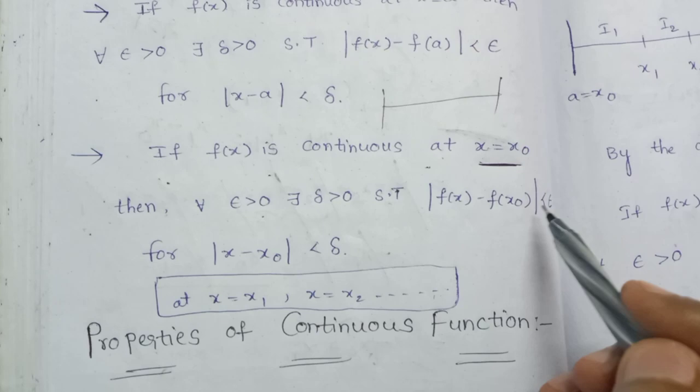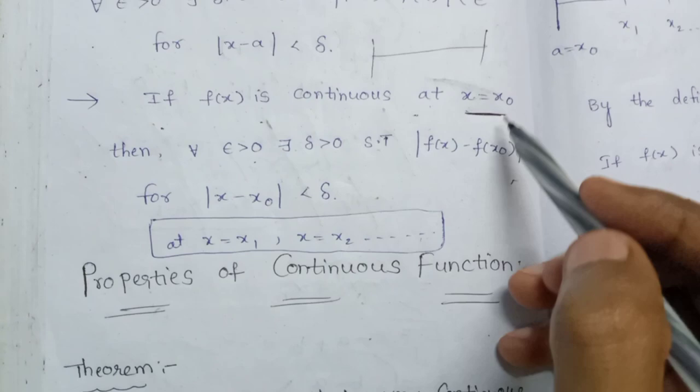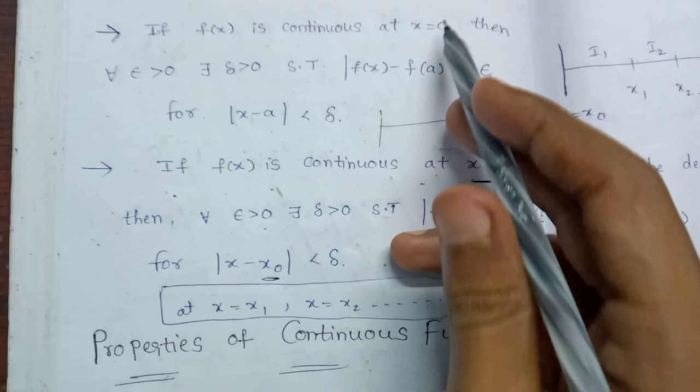...the mod of f of x minus f of x0 is less than epsilon. This means, let's add epsilon. Notice what we should do — if you have an x0, we should have x0.